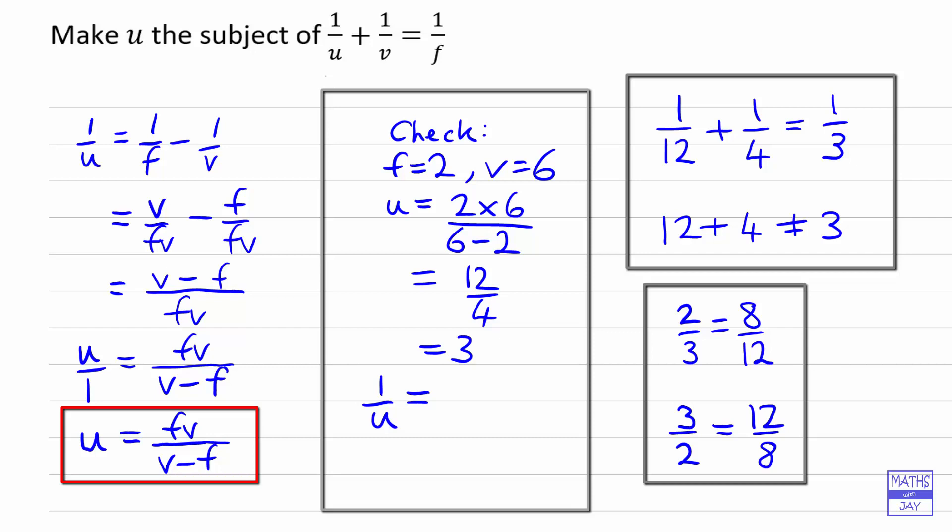And then I need to substitute into the original formula that I was given. So that's actually, that's not such a good idea really, is it? I should, strictly speaking, put a plus in there. Okay, so I'm looking at my original formula. So one over U plus one over V,